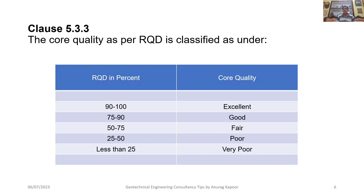So dear friends, this concludes what I wished to tell you all in this lecture. Core recovery and RQD — Rock Quality Designation — are very important parameters to be tested during geotechnical investigation. These are must-have parameters for any geotechnical investigation being done in any mountainous or rocky terrain. I hope you all enjoyed this lecture. Keep on subscribing to my YouTube channel Geotechnical Engineering Consultants.